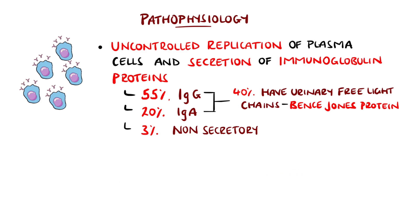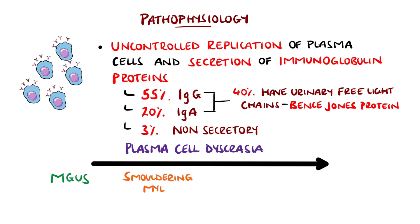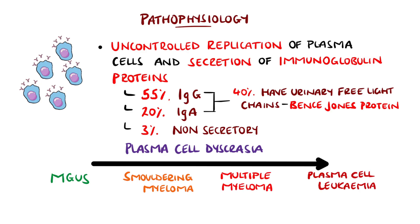Overall, multiple myeloma is part of a spectrum called plasma cell dyscrasias, ranging from monoclonal gammopathy of undetermined significance to plasma cell leukemia, where each stage can evolve into the next.